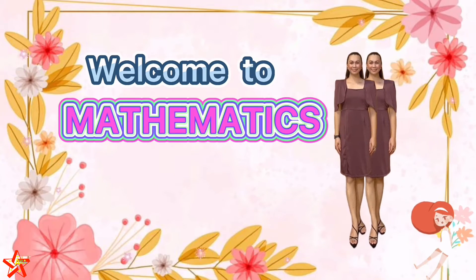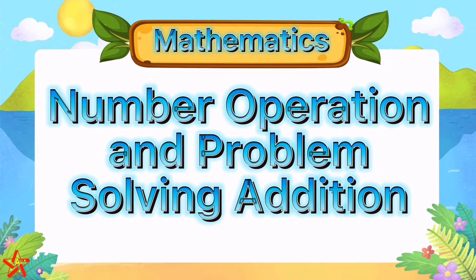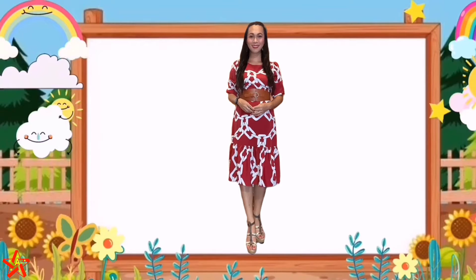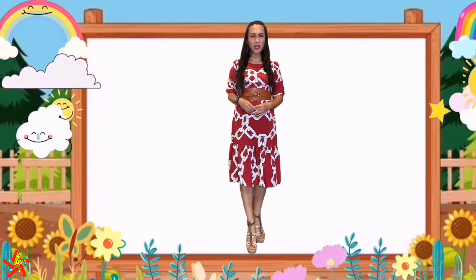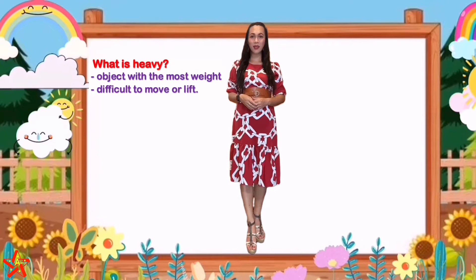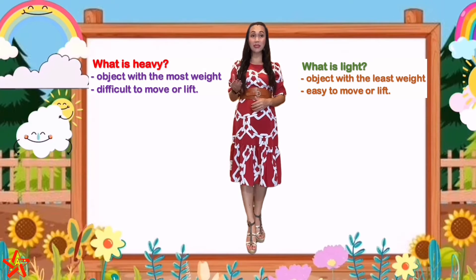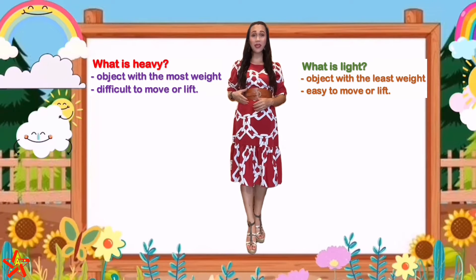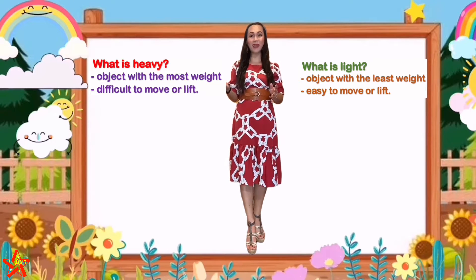Welcome to mathematics class. Last time we learned about heavier and lighter. Can you tell teacher Isa what is heavy and what is light? When we say heavy, it means an object with the most weight — it is difficult to move or lift. Whereas light means objects with the least weight, and you can easily move or lift them. That is the difference between light and heavy.